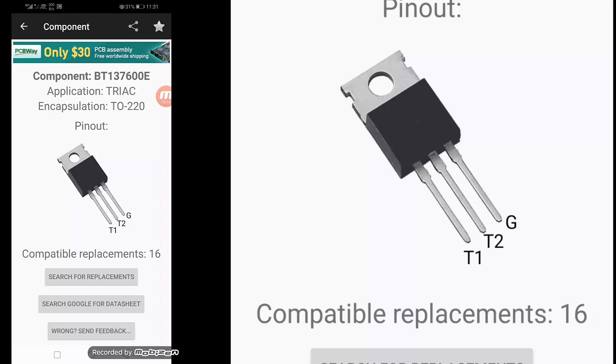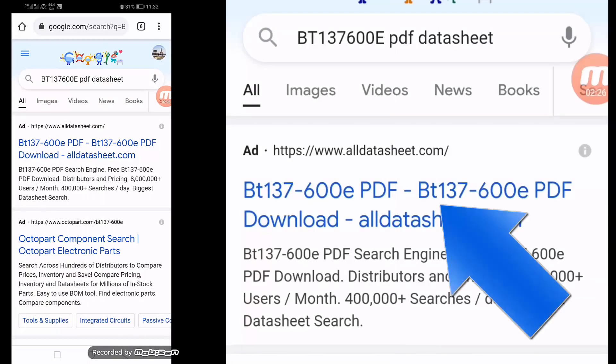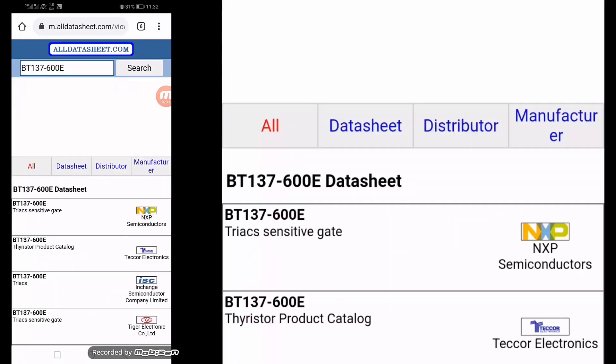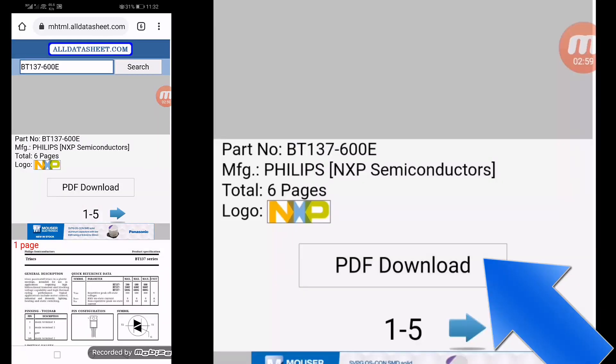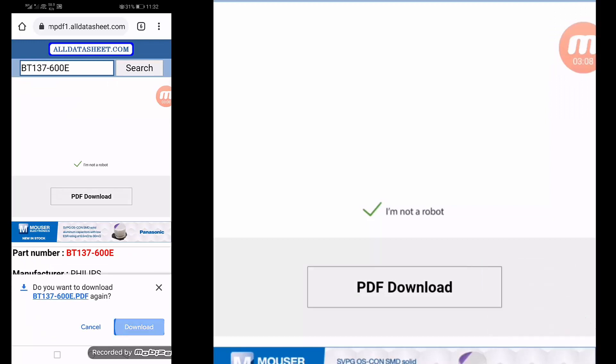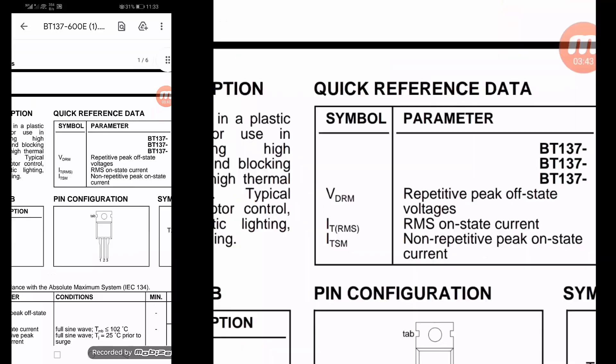We can search the datasheet. Search Google for datasheet. It is here, BT137-600 PDF. Download the first one. Click here - datasheet, six pages, PDF download. Again, hit PDF download and the datasheet will download. I am making this video for mobile users.